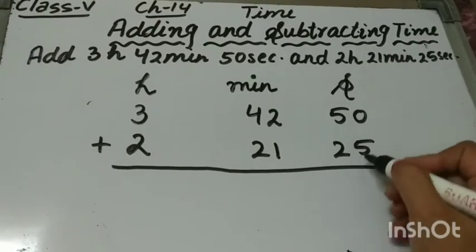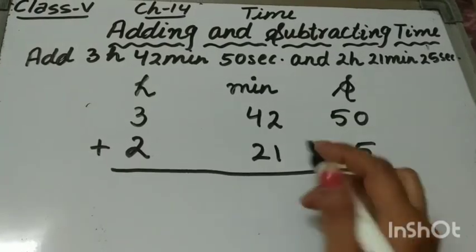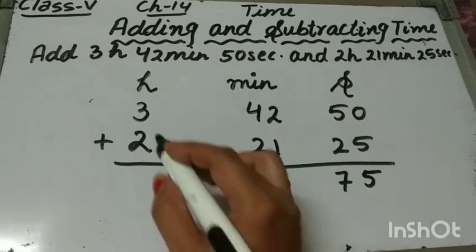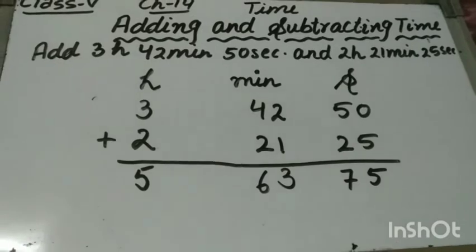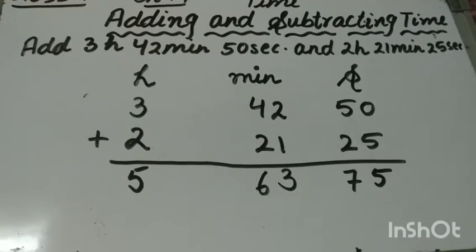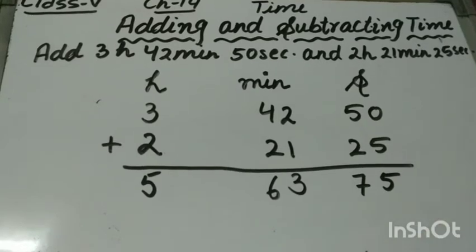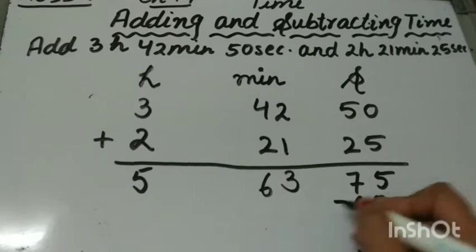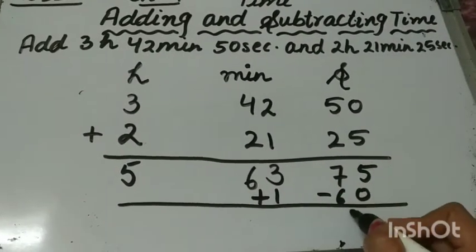So, 0 plus 5 is 5 and 5 plus 2 is 7, so seconds is 75. And 2 plus 1 is 3, 4 plus 2 is 6, and 3 plus 2 is 5. Now we know that 1 minute is equal to 60 seconds, and here it's 75 seconds, so we can convert these seconds into minutes. We subtract 60 from the seconds and add 1 to the minutes.